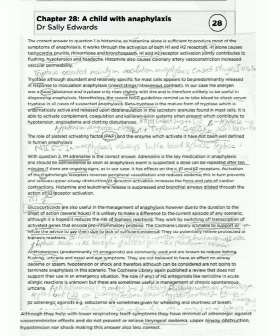With question 2, intramuscular adrenaline is the correct answer. Adrenaline is the key medication in anaphylaxis and should be administered as soon as an anaphylaxis event is suspected. A dose can be repeated after 10 minutes if there are ongoing signs. As in our case, it has effects on the alpha-1, beta-1, and beta-2 receptors.